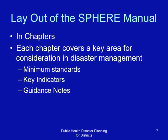The SPHERE manual is laid out in chapters. Each chapter covers a key area for consideration in disaster management, and it includes minimum standards, key indicators for the standards, and guidance notes on what to consider in preparing to meet these standards.